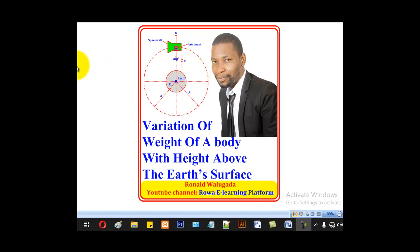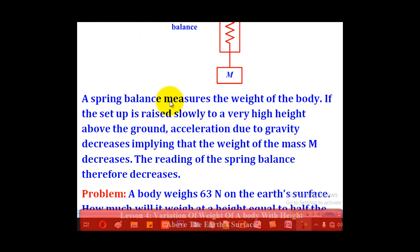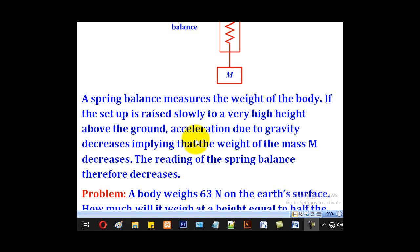Hello viewers, this is Wargada Ronald taking you through today's tutorial on variation of weight of a body with height above the earth's surface. Consider a body of mass M attached to a spring balance as shown in the setup below. The spring balance measures the weight of a body, and if the setup is raised slowly to a very high height above the ground, acceleration due to gravity decreases, implying that the weight of mass M decreases. The reading of the spring balance therefore decreases, as we saw in the previous lesson on variation of acceleration due to gravity with distance from the center of the earth.